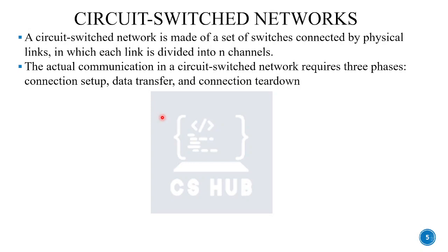For circuit switching there are three phases. First is connection setup: a path between source and destination is established and resources are reserved. Second is data transfer: once the path is set up, the data is transferred. Third is connection teardown: when done, resources are released.